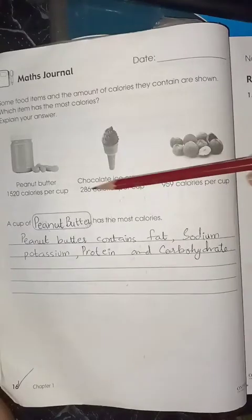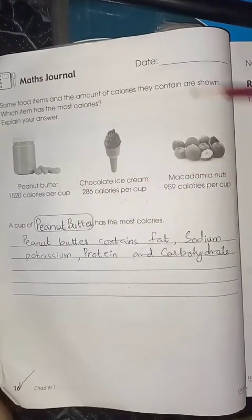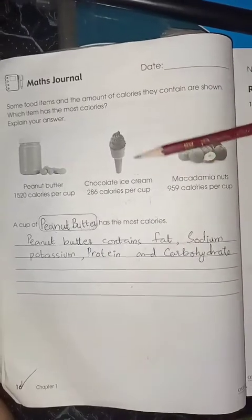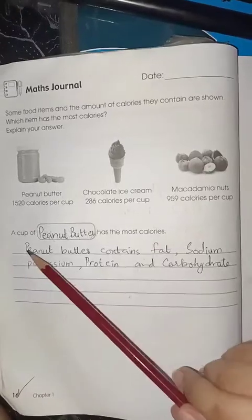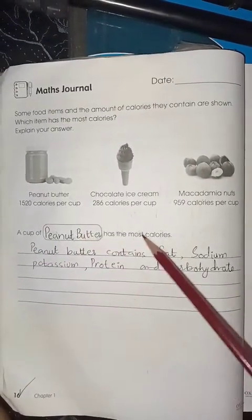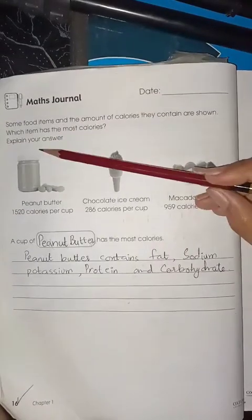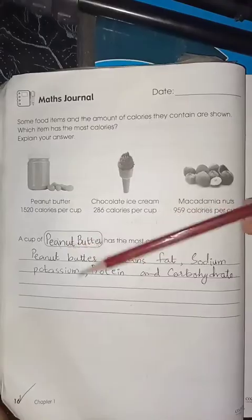You can see 1522, 2826, 816, 286, 959. So you can easily identify that peanut butter is having the most calories. A cup of peanut butter has the most calories.